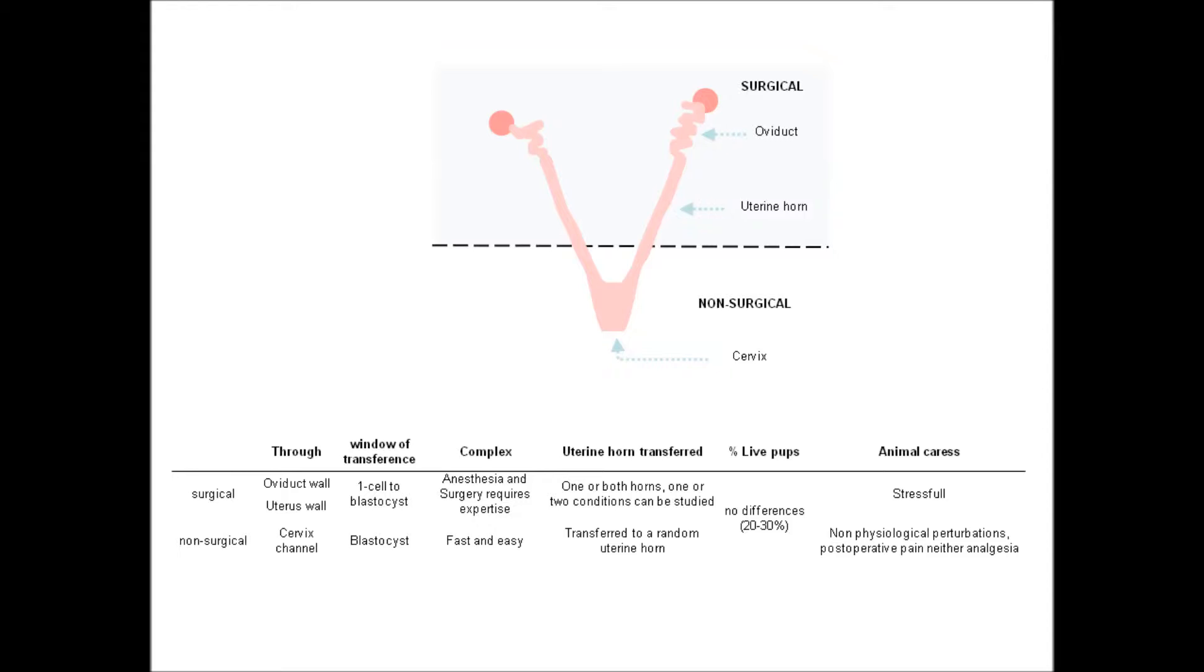For embryo transfer, there are two main methods that are suitable, surgical and non-surgical. The surgical method requires anesthesia. It is more complex, stressful and painful for animals, although embryos can be transferred at early stages. Non-surgical method is an easier option that has been proven to generate similar results, and this is the option that will be explained in this video.